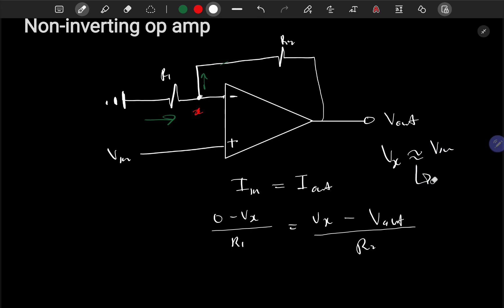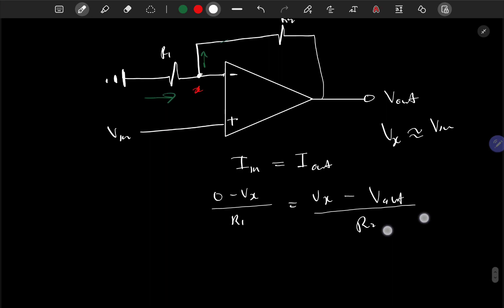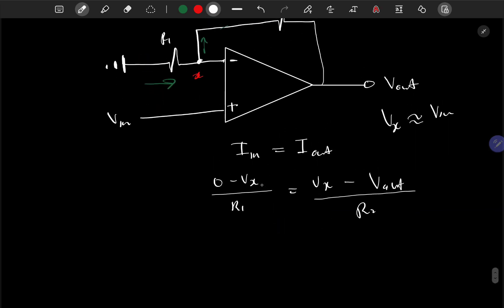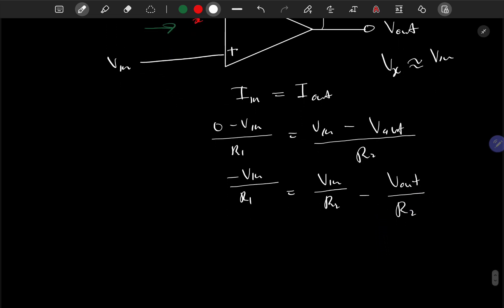So now we can substitute Vx with Vin in our equations. After doing some math, we get -Vin/R1 = Vin/R2 - Vout/R2.